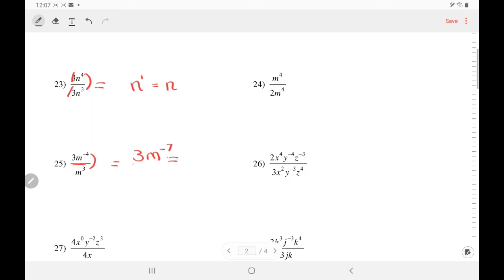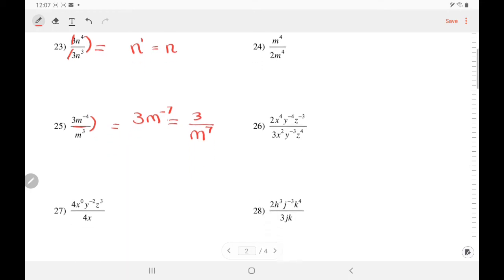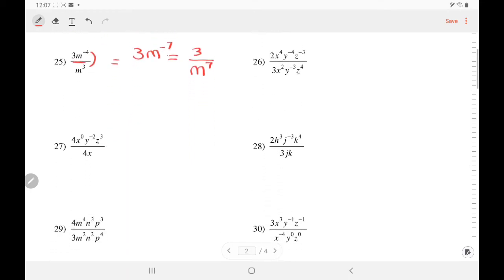3 is going to stay where it is. M is going under. And once it goes under, it used up its negative exponent.